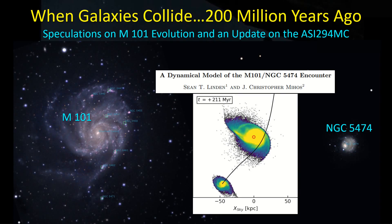Hey guys, welcome back. I've been out doing some imaging — at least a little bit. I get about one good night for every 10 bad nights, but I have been doing some galaxy imaging with my C925, the focal reducer, the ASI294MC, and the Antlia tri-band filter.